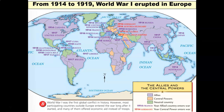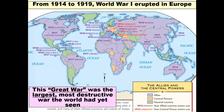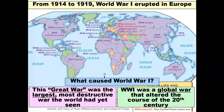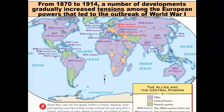From the year 1914 to 1919, World War One erupted in Europe. You can see from this map how the world was shaped around that time period — basically the Allies and the Central Powers. This great war was the largest, most destructive war the world had yet seen — a global war that altered the course of the 20th century. But what caused World War One?